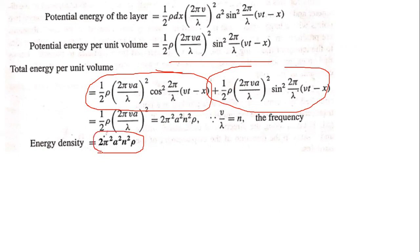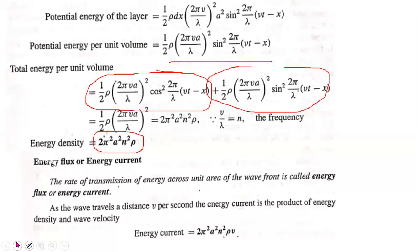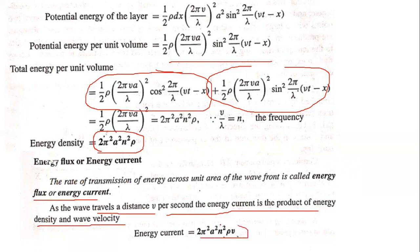The total energy remains constant. Energy flux: the rate of transmission of energy across unit area of the wavefront is called energy flux or energy current. As the wave travels a distance v per second, the energy current is the product of energy density and wave velocity, that is 2π² a² n² ρ v.